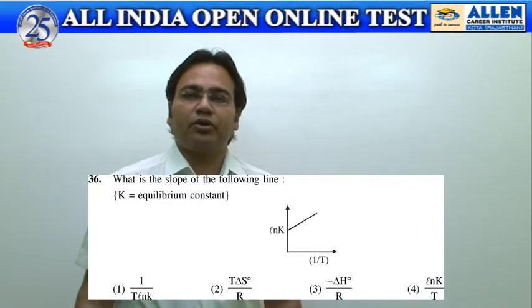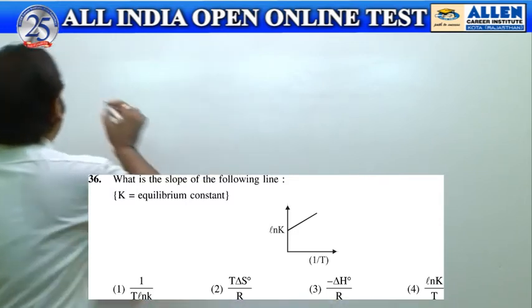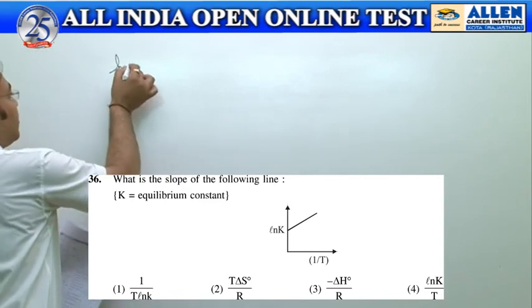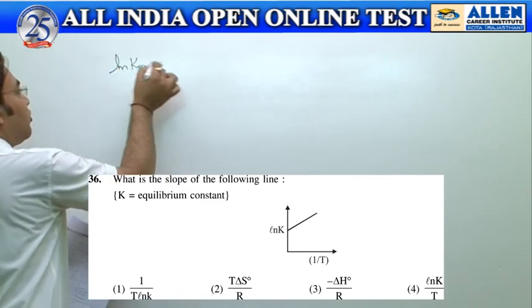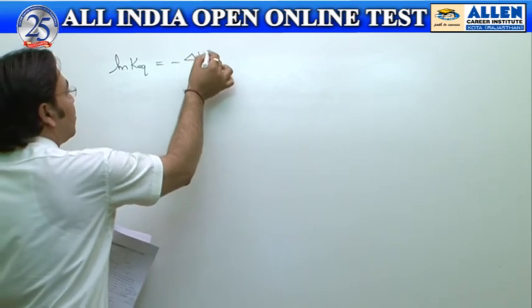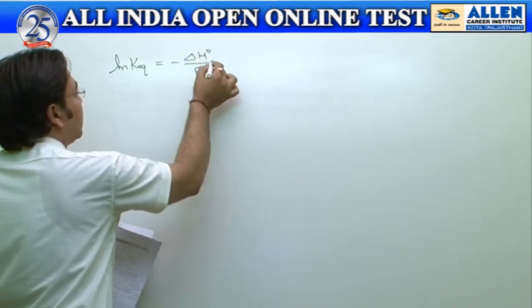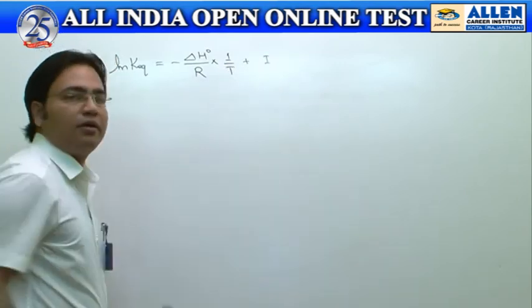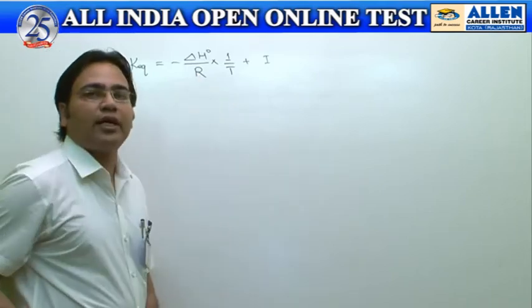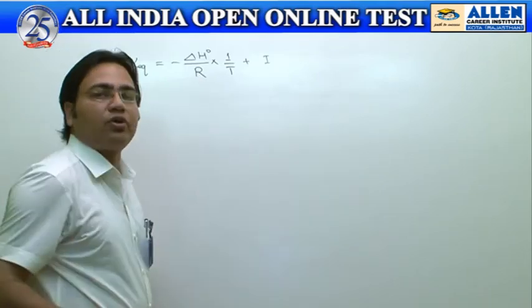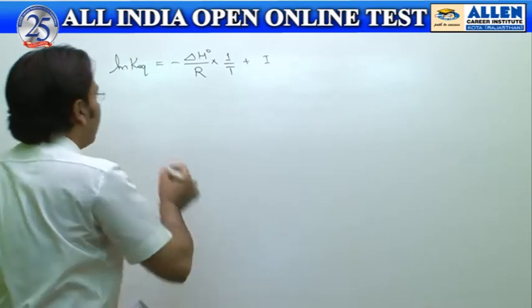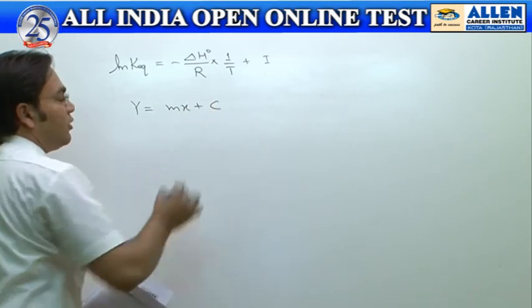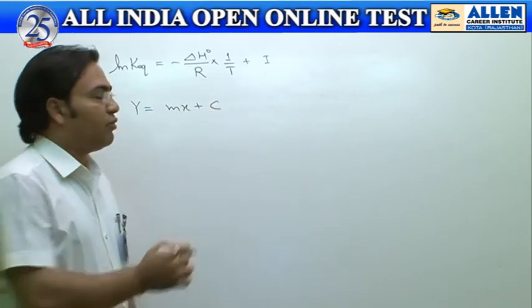Now we will discuss question number 36. It is based on chemical equilibrium. In question 36, we should know the equation: ln K equilibrium equals minus delta H upon R times 1 by T plus I, where I is a constant, delta H is the enthalpy change, R is the gas constant, and T is temperature in Kelvin.